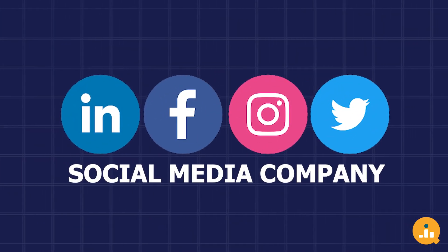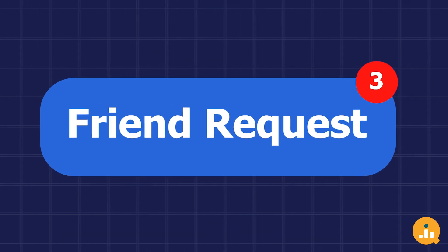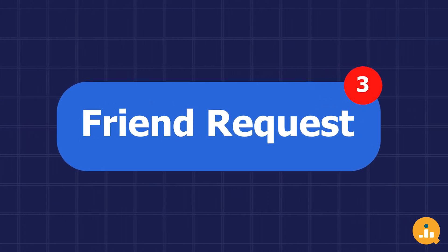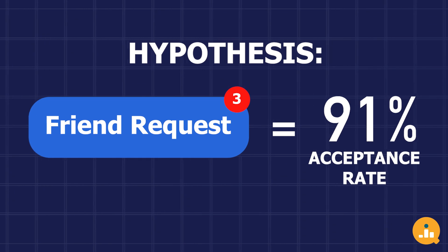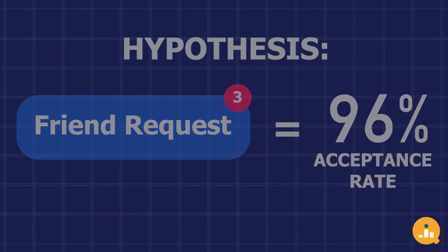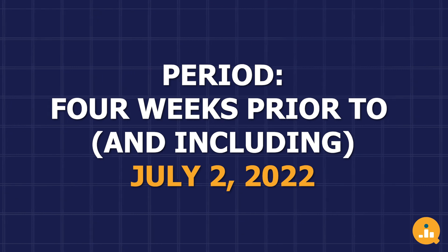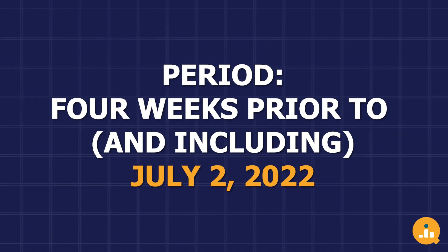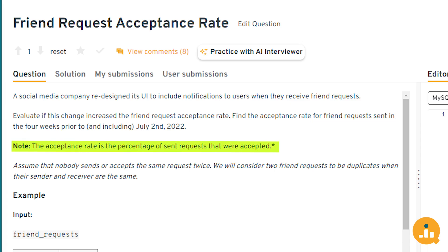A social media company redesigned its UI to include notifications to users when they receive friend requests. Evaluate if this change increased the friend request acceptance rate. Find the acceptance rate for friend requests sent in the four weeks prior to and including July 2, 2022. We think about a social media company that might be testing or using this type of query or feature.